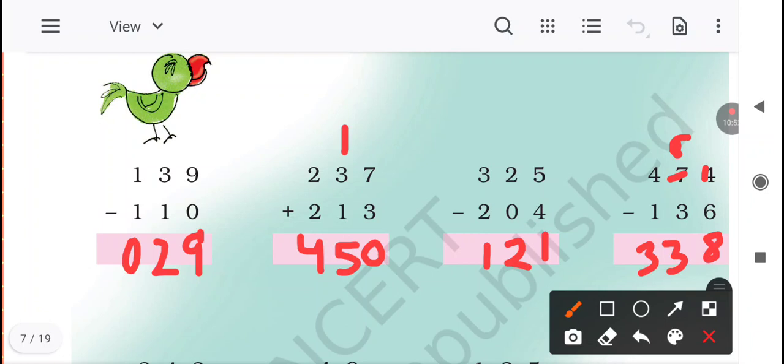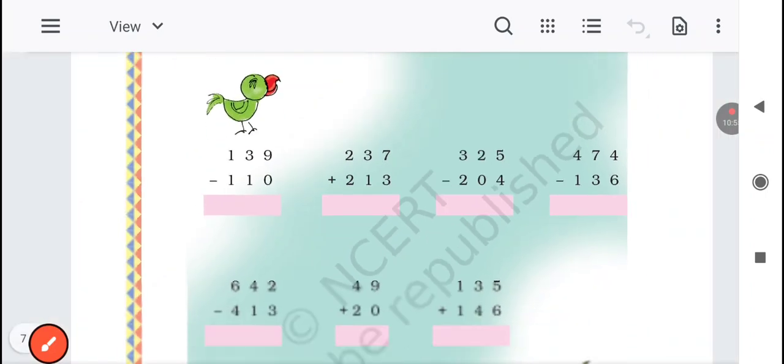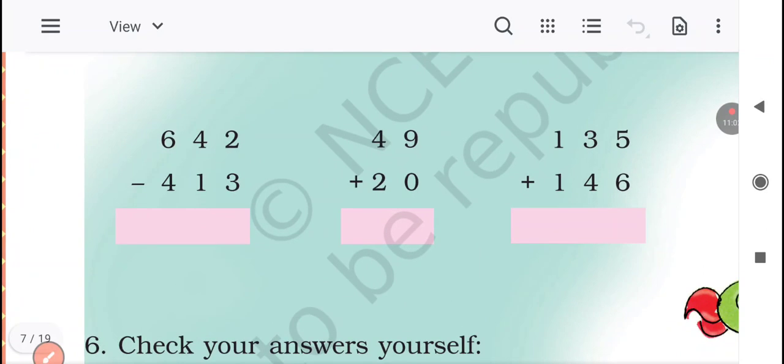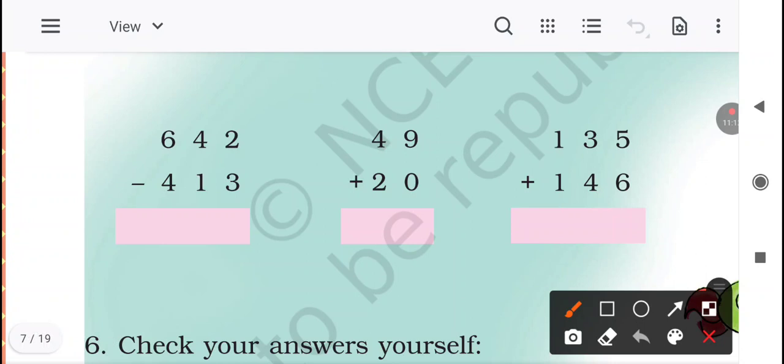Now everyone is able to do it fast. Yes. Good. So this all comes from practice. We have to do lots of practice, then we will be able to do it fast. Same, again minus is there. And here 2 minus 3, it is not possible. 2 will take the help of 4. 4 will become 3 and 2 will become 12. 12 minus 3 is 9. 3 minus 1 is 2. 6 minus 4 is 2. 229. Now plus is there. 49 plus 20 - 9 plus 0 is 9, 4 plus 2 is equal to 6. 69. Again plus is there. 135 plus 146. 5 plus 6 is 11. 1 we will write here and 1 will be carried forward. 1 plus 3 is 4, 4 plus 4 is 8. 1 plus 1 is equal to 2. Answer is 281.